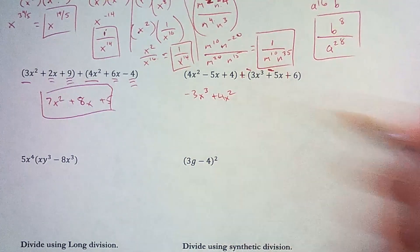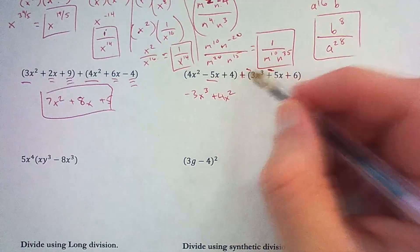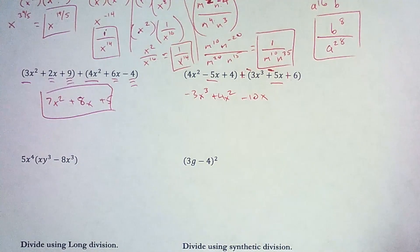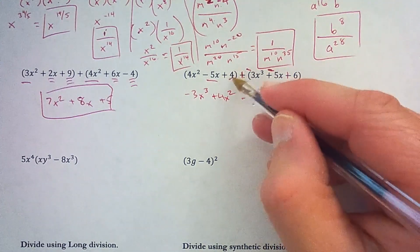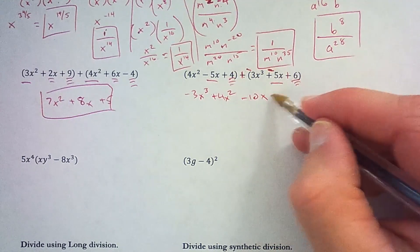So plus 4x squared. Then I have negative 5x plus negative 5x. That's negative 10x. And I have 4 plus 6, and that is 10.